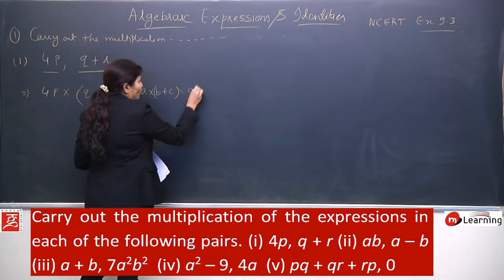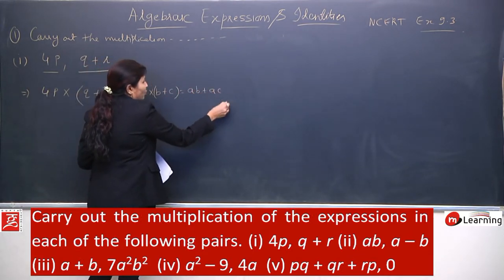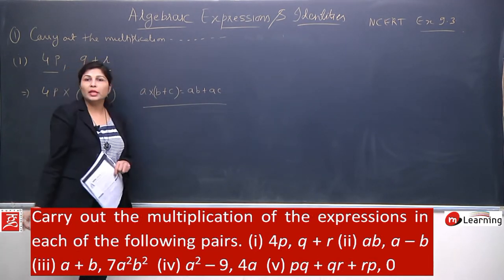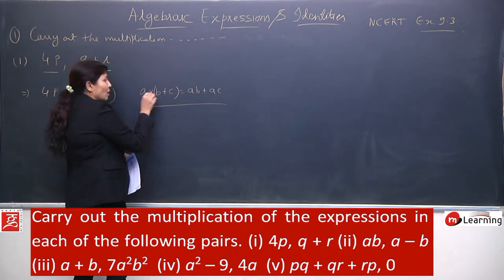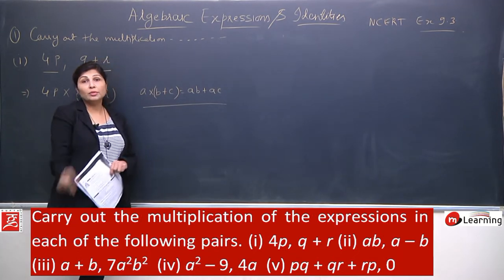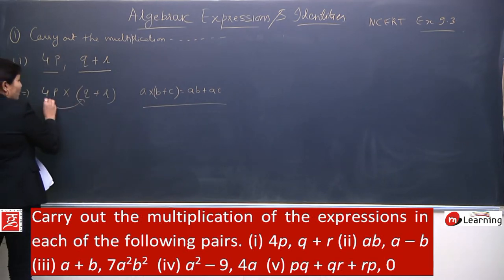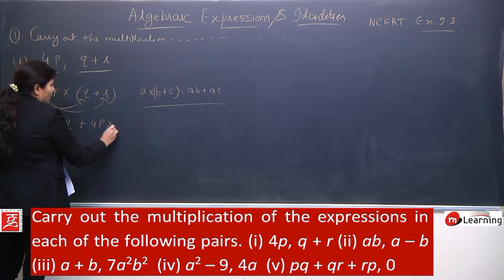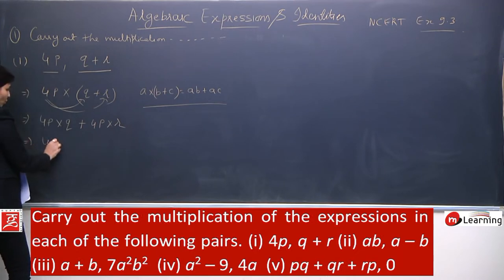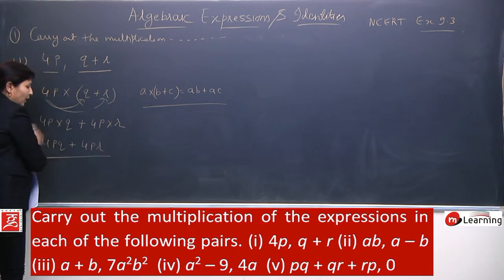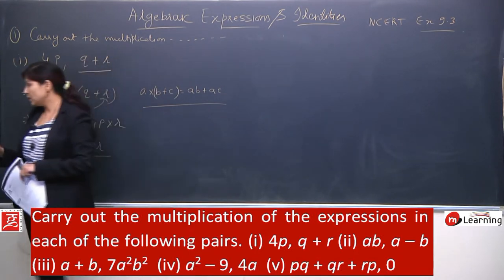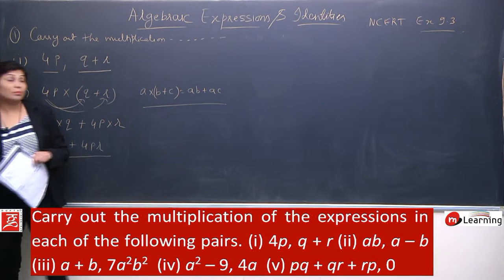Which property will apply? Yes, distributive property. Distributive property says that whatever number or variable is outside the bracket will multiply with each and every term inside the bracket. Same will happen here. 4p will multiply with this, 4p will multiply with this. 4p into q plus 4p into r. So the answer is 4pq plus 4pr. Multiplication is very easy but you should remember the properties of how to multiply.